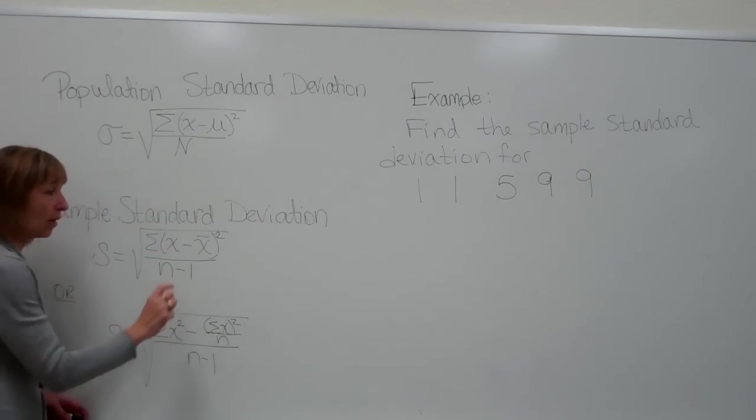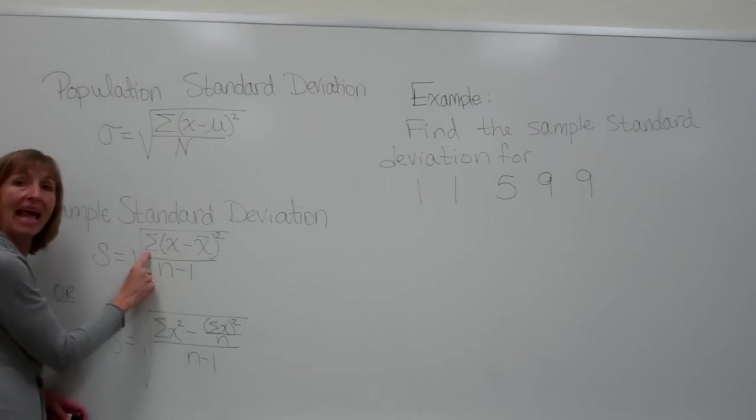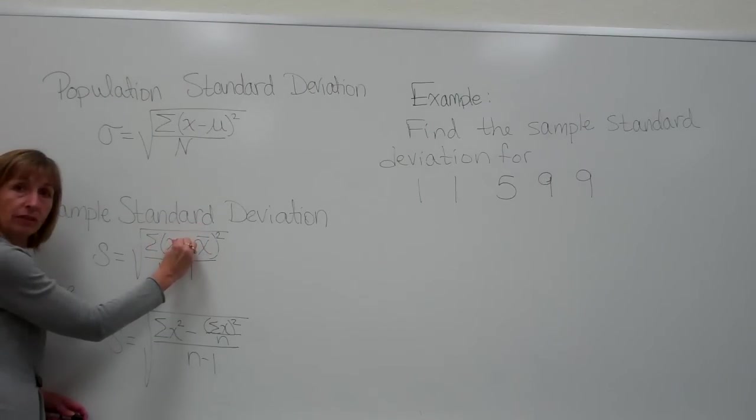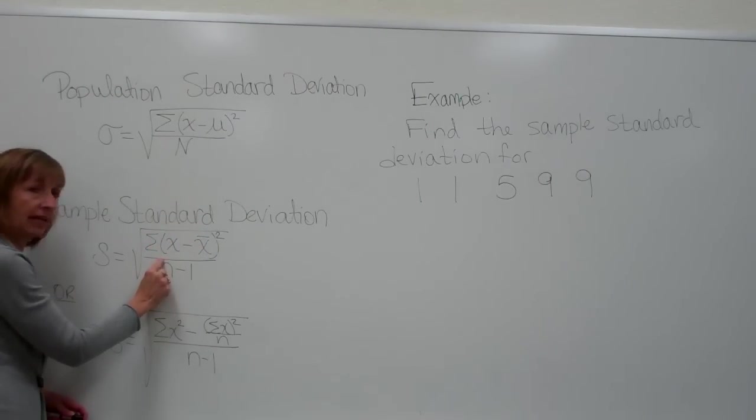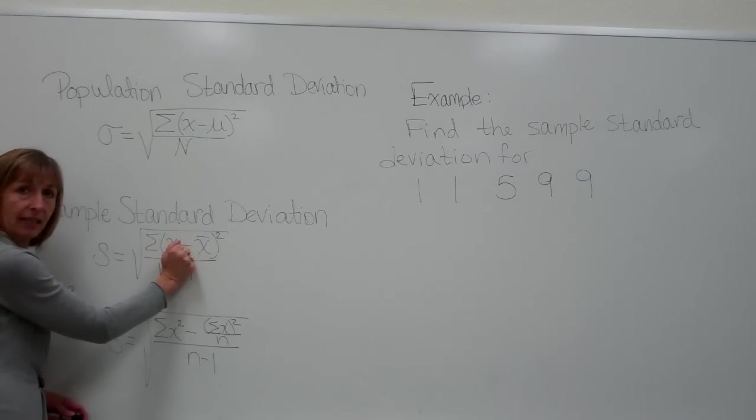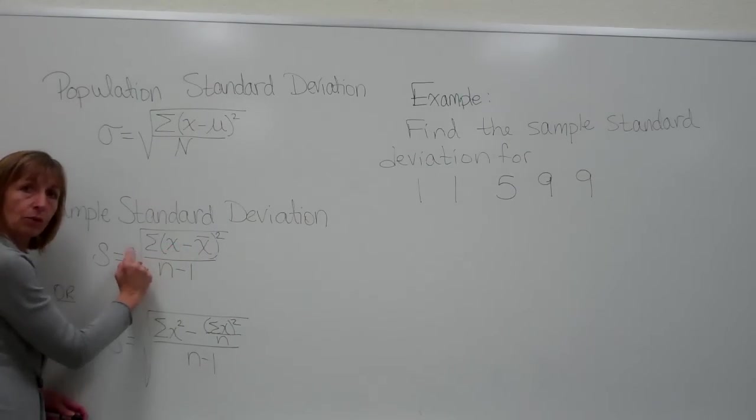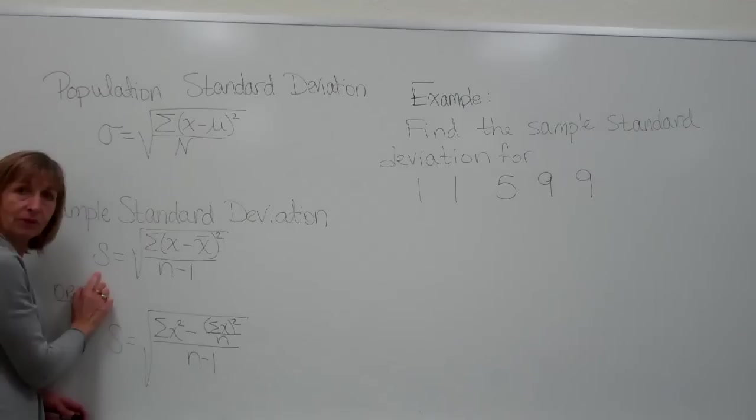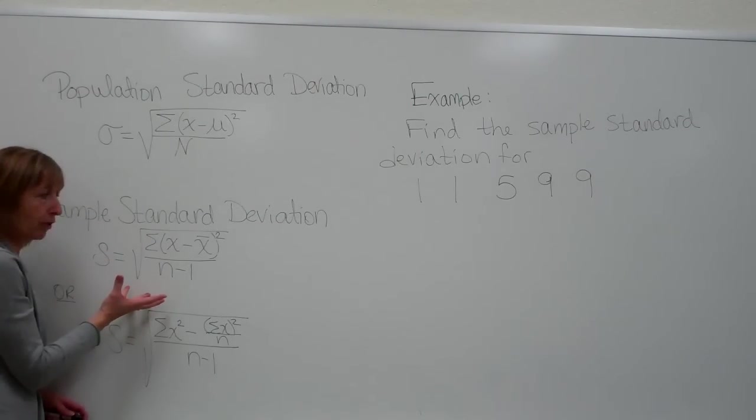We'll square that number and do it for every single one of our data values. Once we get all of the squares of those differences, we will add them up. This capital sigma is to add up those values. And we'll get a total in our numerator that we'll then divide by our number of data values in our sample minus 1, get our quotient, and then after we get our quotient, we'll take the square root of that number to give our sample standard deviation.